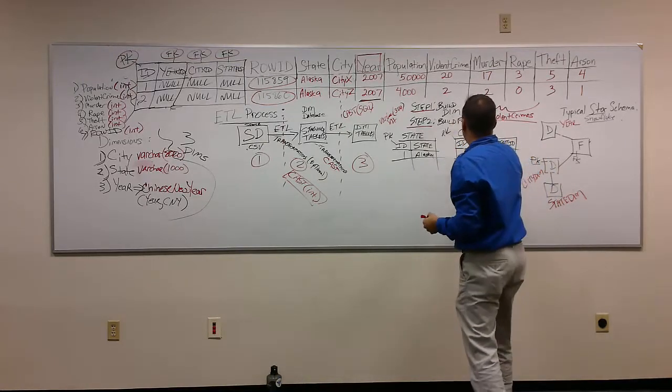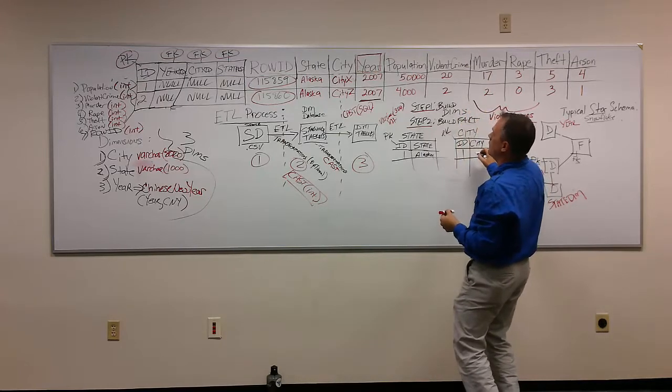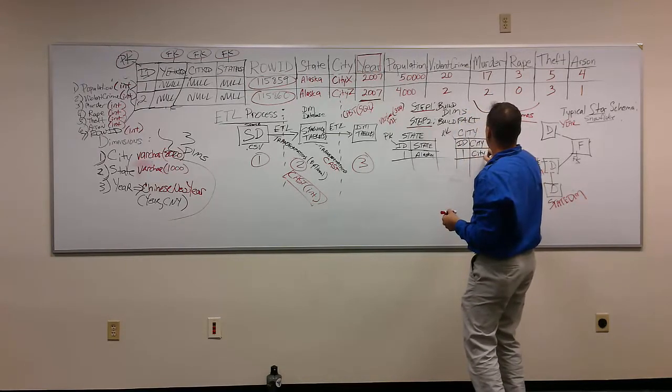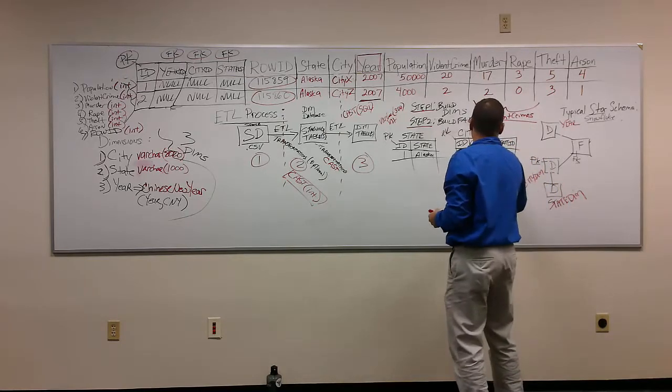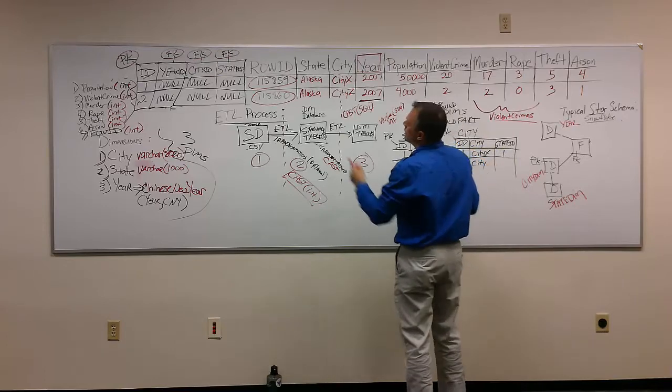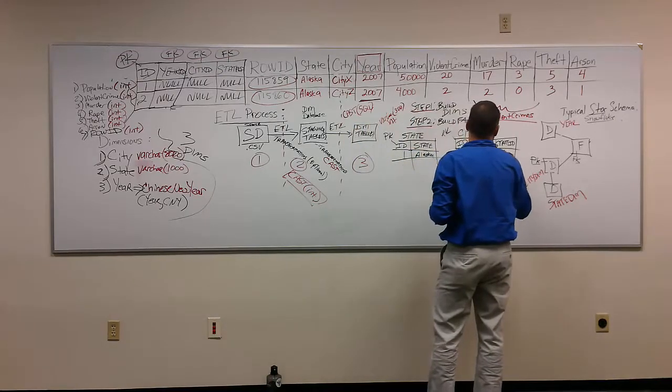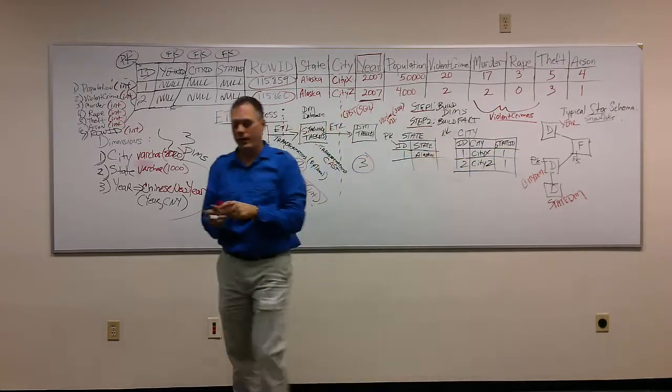So in this example, it would be one, the city would be city X, and the state ID would be one. Then it would have two, it would be city Z, and the state ID would be one. So this is what our target table should look like.